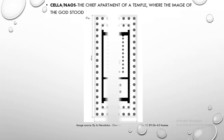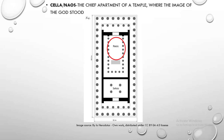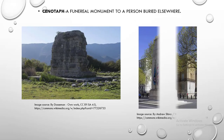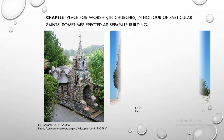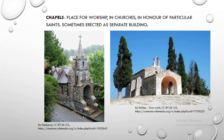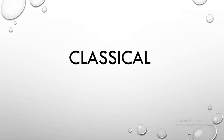Cella or Naos. Cella or Naos is the chief apartment of a temple, where the image of the god stood. Cenotaph. Cenotaph is a funereal monument to a person buried elsewhere. Chancel. Chancel is the space for clergy and choir, separated by screen from the body of the church, more usually referred to as choir. Chapel. Chapel is a place for worship in churches, in honor of particular saints, sometimes erected as a separate building.